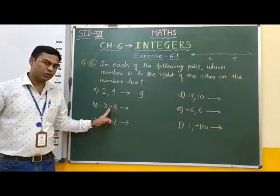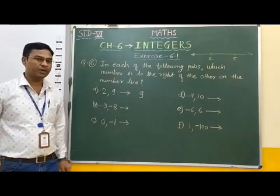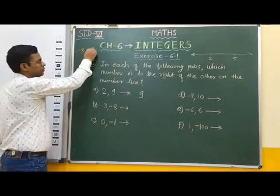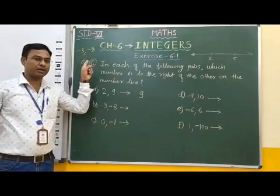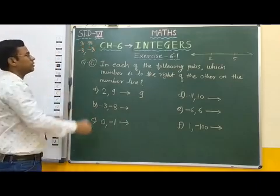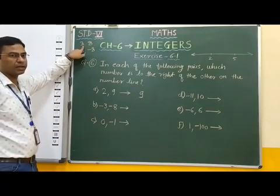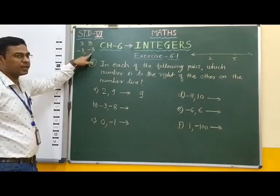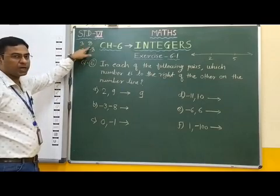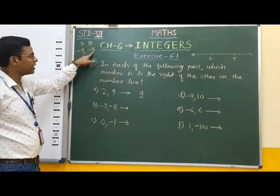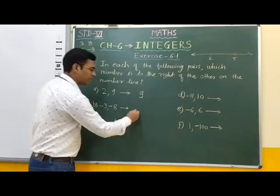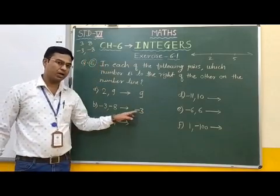Now, among the next two numbers, minus 3 and minus 8: if we have two negative numbers, the number which appears greater in magnitude is actually smaller. For example, if we take positive numbers, 8 is greater than 3. But in negative numbers, minus 8 is smaller than minus 3. So among minus 3 and minus 8, minus 3 is greater. Therefore, minus 3 is on the right side.